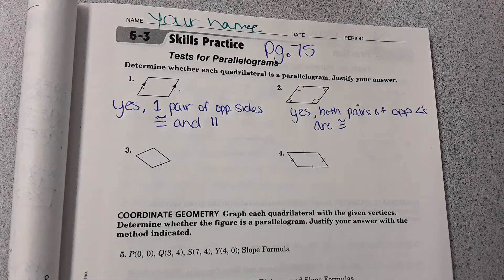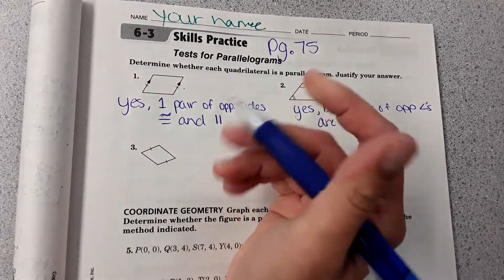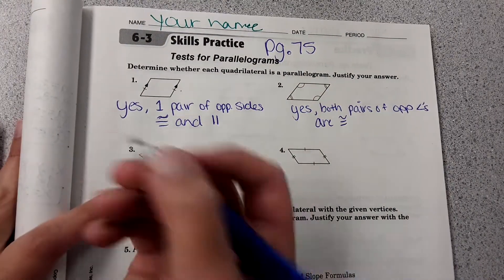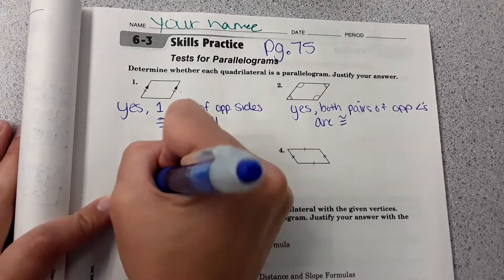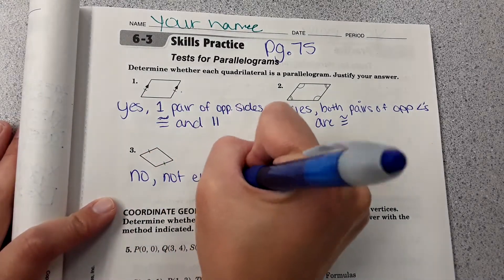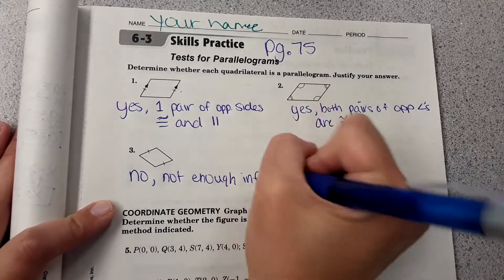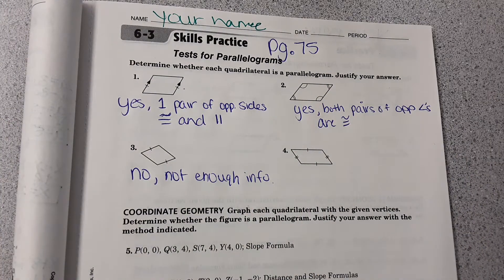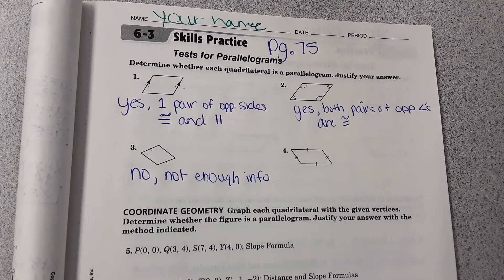And then number three, it just shows that you have one set of opposite sides that are congruent. You don't have enough information there, so no, you can't prove it's a parallelogram. Not enough info. It could be, but you can't say for sure.